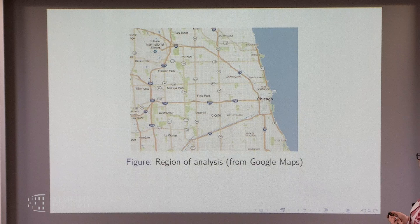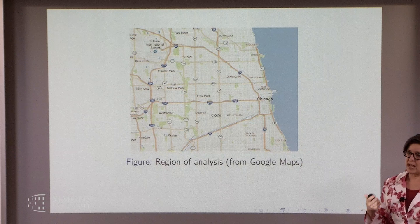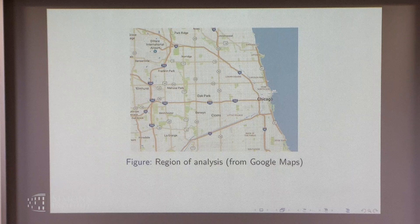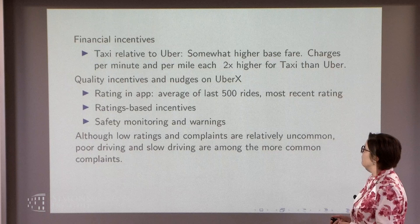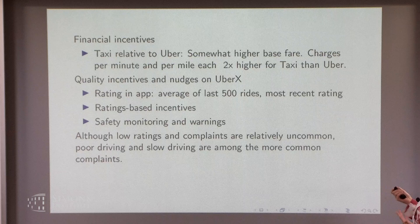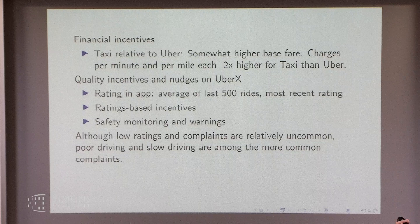We're going to look at the region of Chicago. The reason we picked Chicago is that the Uber app is used to dispatch taxis there. So we're going to get identical telemetry between UberX trips and taxi trips, which will allow us to compare apples to apples. Just to establish the differences between taxis and Ubers: they have different financial incentives — charges per minute and per mile are roughly two times higher for taxis than Ubers, so at least the relative considerations are similar for the two.